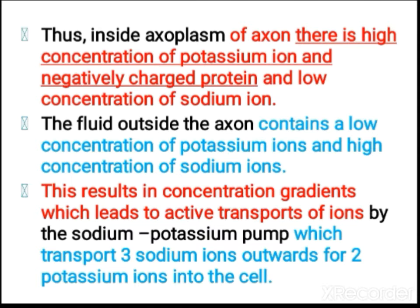Inside the axoplasm, there is a high concentration of potassium ions and negatively charged proteins, and a low concentration of sodium ions. The fluid outside the axon contains the opposite: low concentration of potassium ions and high concentration of sodium ions. This results in concentration gradients, leading to active transport of ions by the sodium-potassium pump, which transports three sodium ions outward for two potassium ions inside the cell.